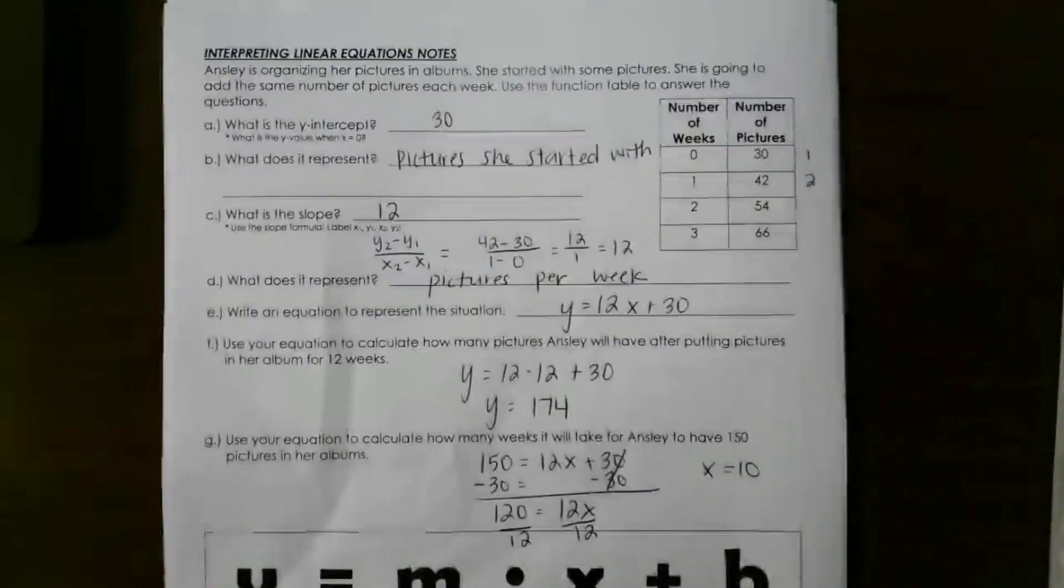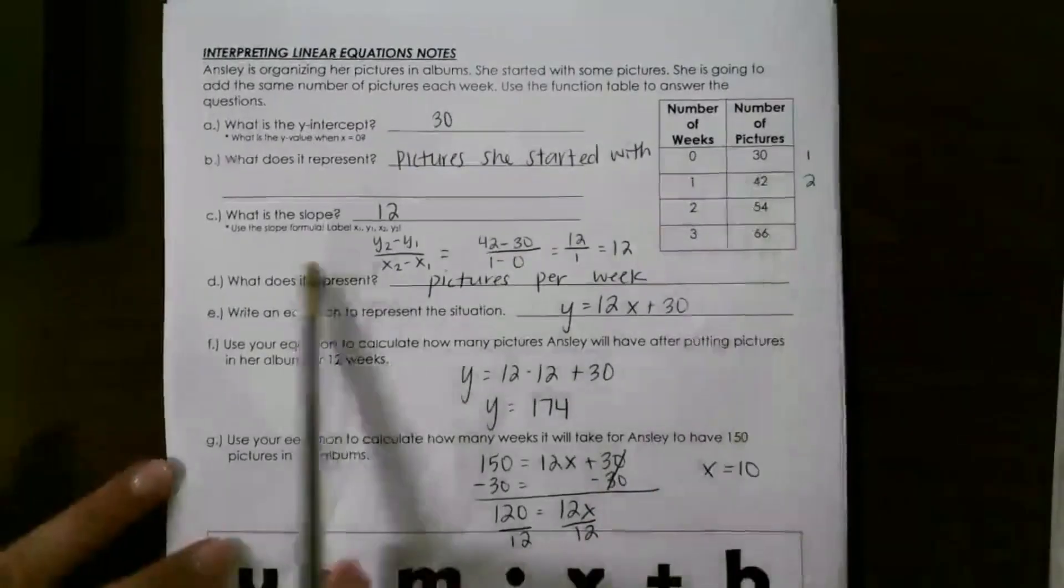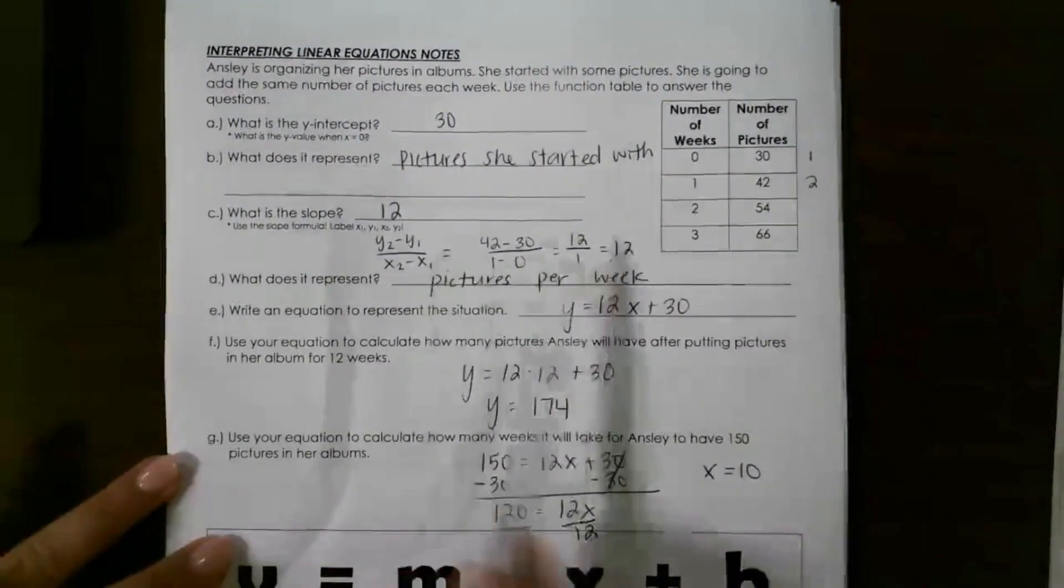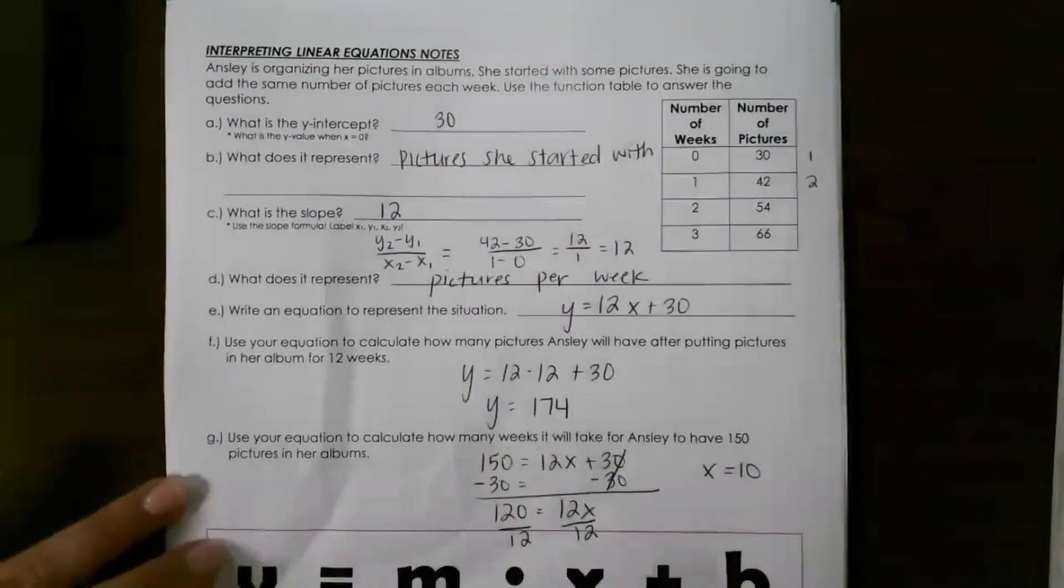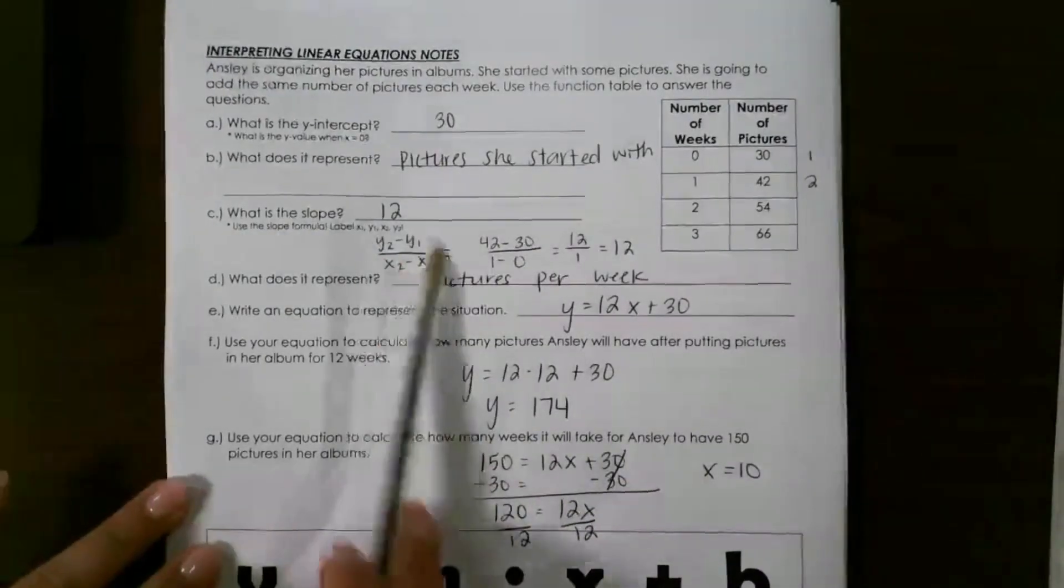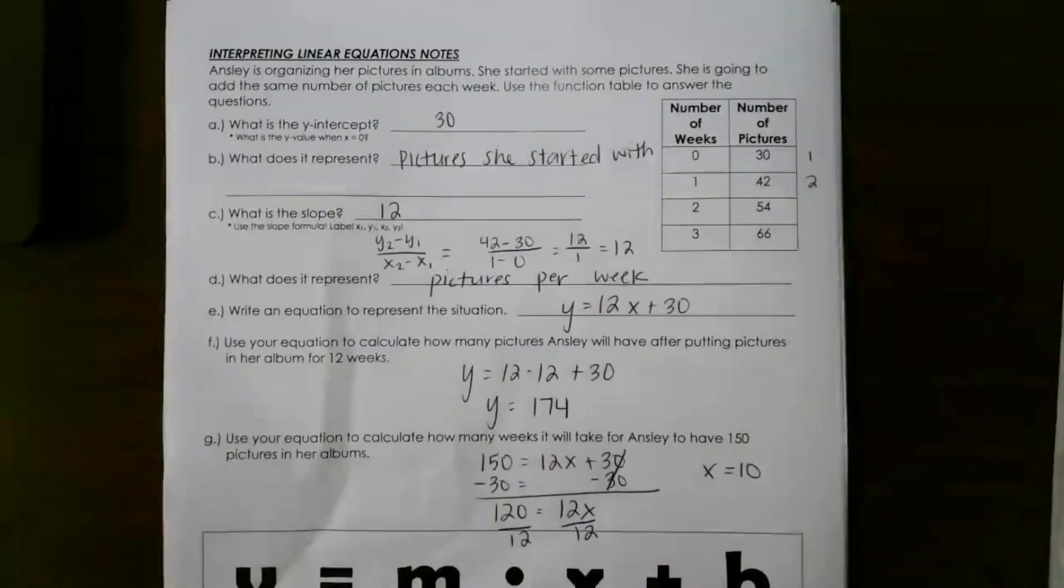So just remember, use your table - calculating slope is the only thing that's different. So looking at slope and y-intercept is a little bit different from a graph. So just remember that slope formula of y2 minus y1 over x2 minus x1.